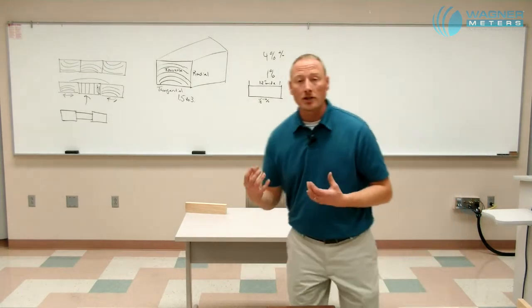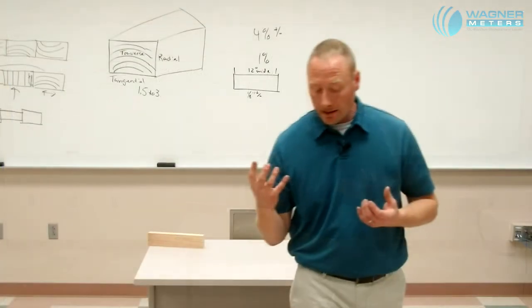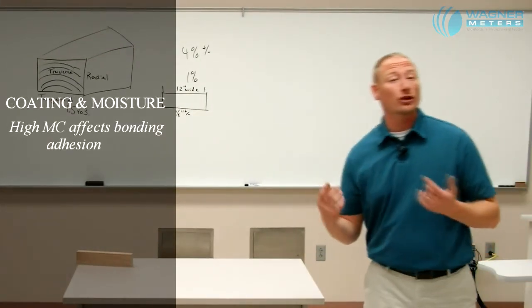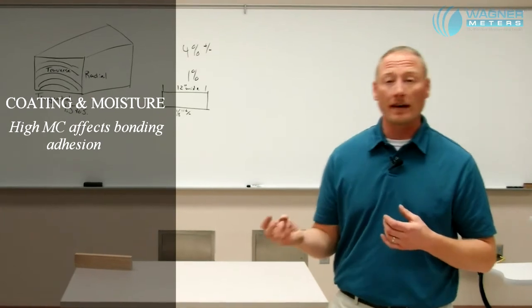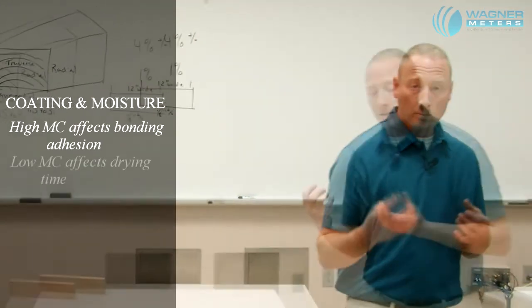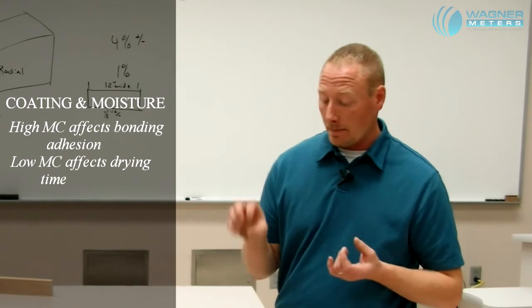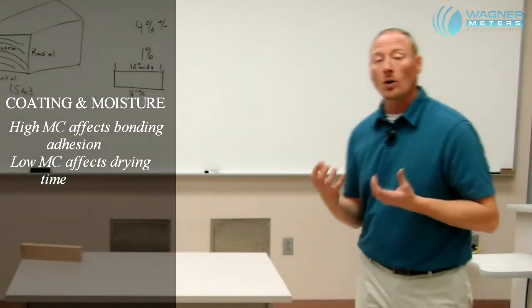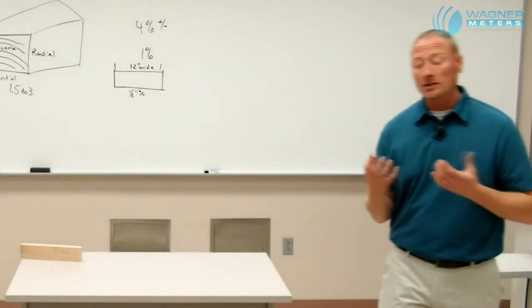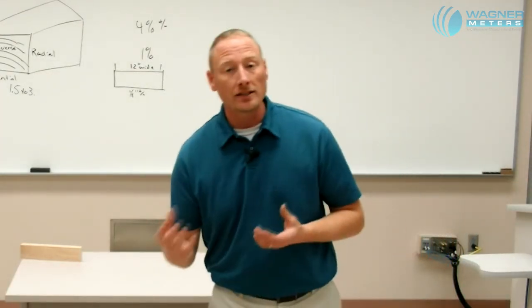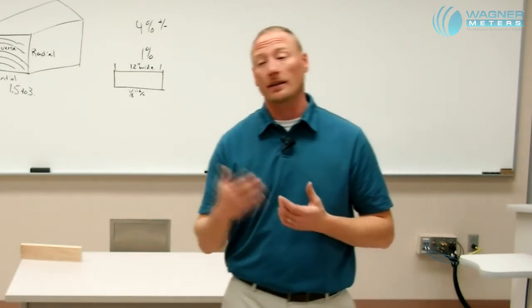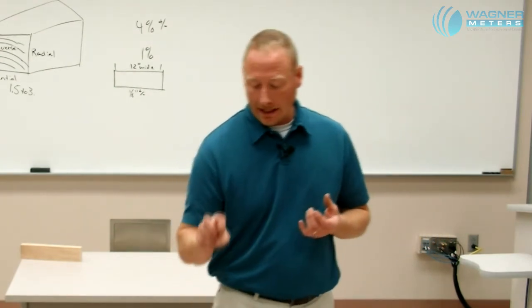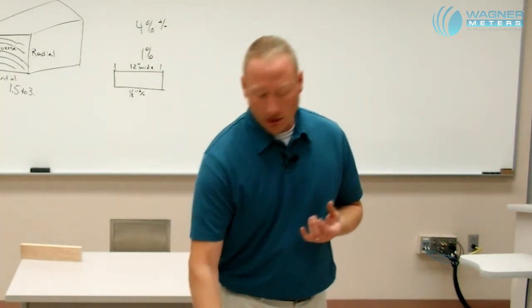Another area that incorrect moisture content can affect is in the application of coatings, especially that of water-based coatings. Moisture content that is too high can affect the bonding or the adhesion of that finish to that product. Moisture content that is too low can actually speed up or increase the drying time so much that it actually affects the overall quality of that finish. Regardless of the type of finish that you use, significant changes in moisture content or moisture content that is too high or too low can create severe problems in the overall quality and finished product that you are trying to achieve.